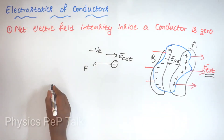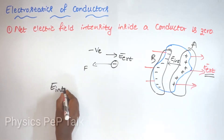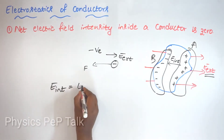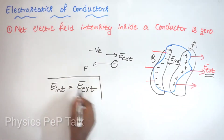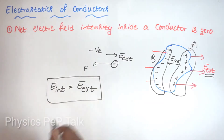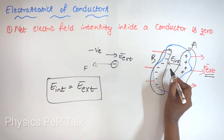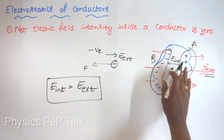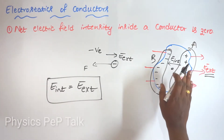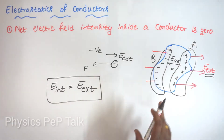As a result, the internal electric field equals the external electric field. Therefore, the net electric field intensity inside the conductor is always zero.